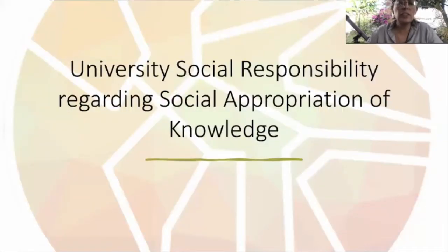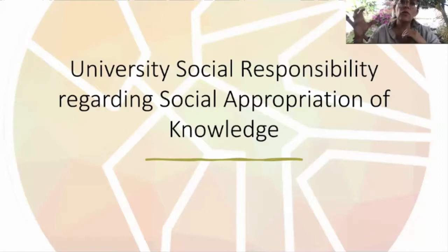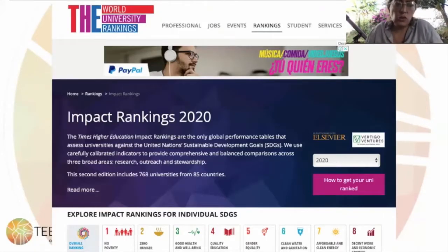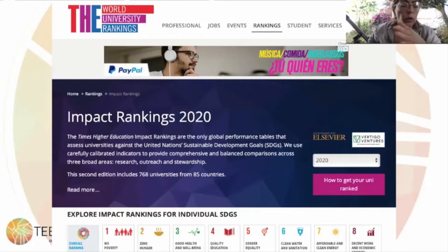University social responsibility implies the responsibility that higher education institutions have inside the academy and faculty towards students, but also with other stakeholders and other actors. When talking about social appropriation of knowledge, it mainly refers to the different stakeholders that universities are usually interacting with. There are many rankings and different ways to measure the social impact of universities. The World University Rankings is one of the most important, linking universities' social impact to the SDGs developed by the United Nations.